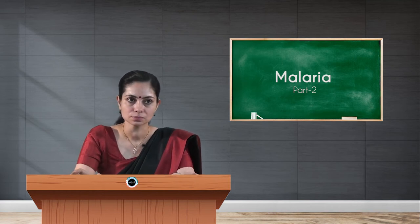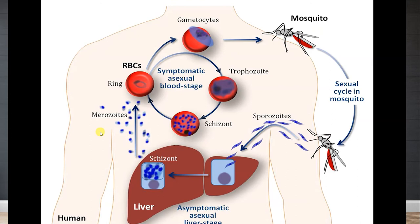The diagram shows sporozoites in spindle shape entering the liver, going through stages to finally release merozoites. These merozoites enter into RBCs where the cycle continues attacking the RBCs, and some of them turn to gametocytes.